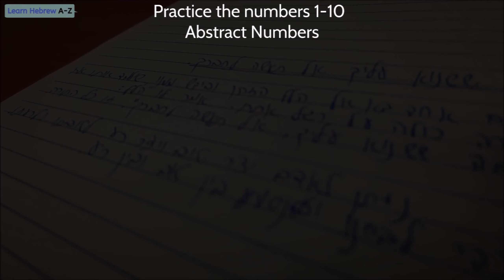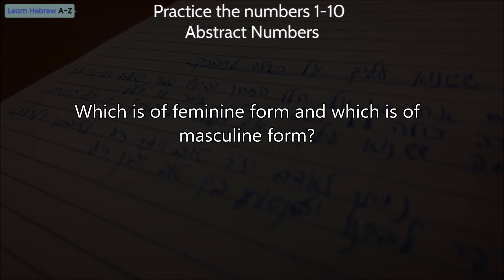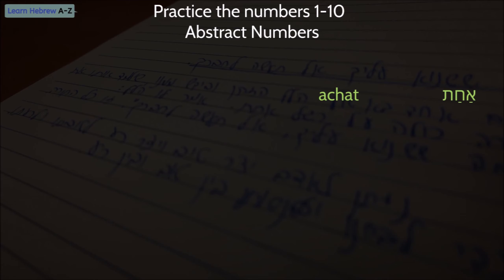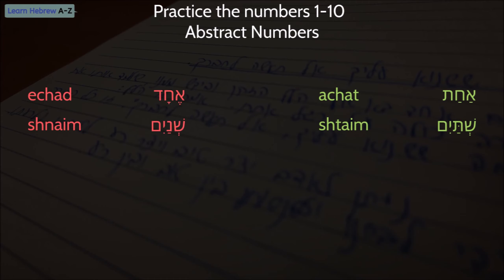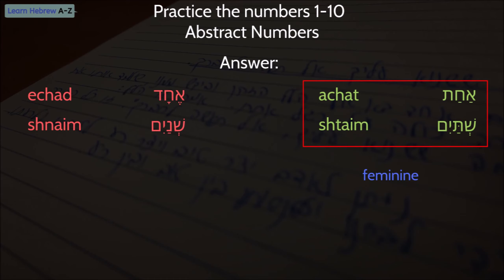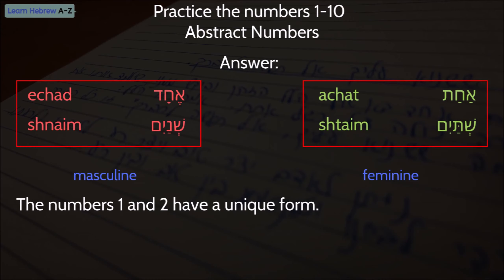Remember the tips I just gave you? Which of these number groups is of feminine form and which is of masculine form? The numbers are Achat and Shtaim for the first group, and Echad and Shnaim for the second group. The answer is Achat and Shtaim are of the feminine gender, and Echad and Shnaim are of masculine gender. These numbers have a unique form and do not follow the rules in the tips I gave you — you just need to memorize those two numbers and their form.